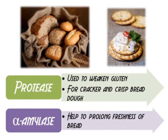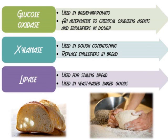In baking, protease is used to weaken gluten and is applied in crackers and crisp bread dough. Alpha-amylase helps to prolong the freshness of bread. Glucose oxidase is used in bread improving; it acts as an alternative to chemical oxidizing agents and emulsifiers in bread dough. Xylanase is used in dough conditioning as a replacement for emulsifiers in bread. Lastly, lipase is used for retarding staling in yeast-raised baked goods.